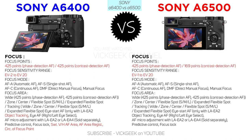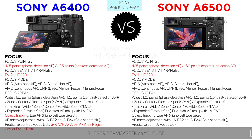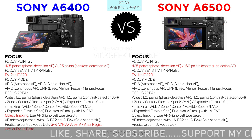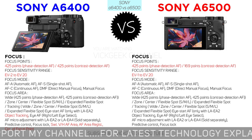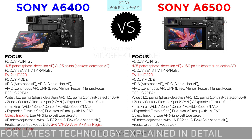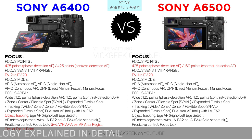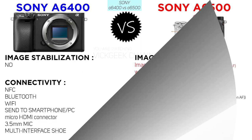The focusing points on the new a6400 are 425 for both phase detection and contrast detection autofocus, but the a6500 has fewer contrast detection AF points — only 169. The exposure value can also go one stop negative on the new a6400. Additionally, the a6400 introduces new focus-related settings such as object tracking, live autofocus area lock, and similar features. Zebra, peaking, and other functions remain the same on both cameras.